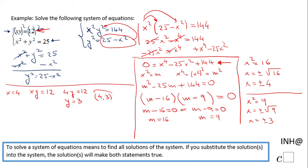For x equals negative 4, we can do the same process and we have negative 4y equals 12, which is going to give us y equals negative 3.